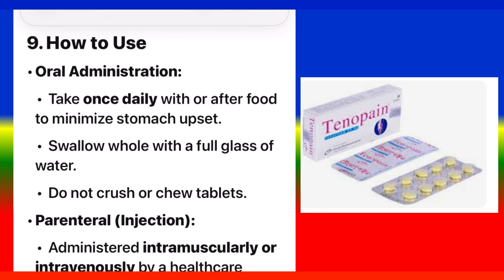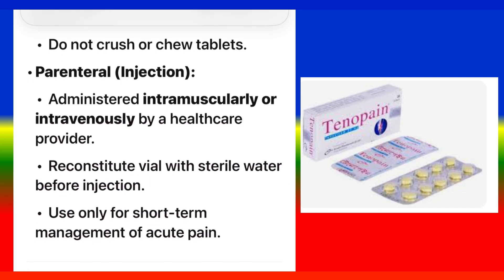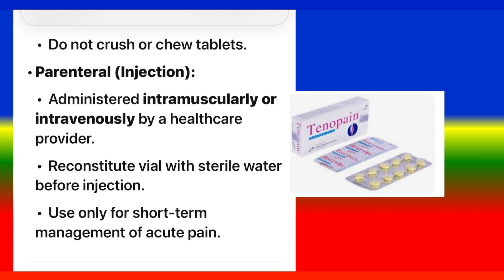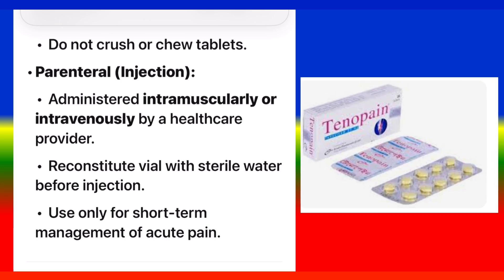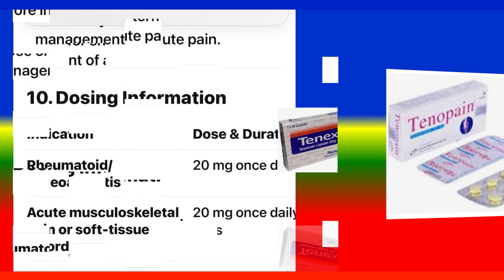How to Use — Oral administration: Take once daily with or after food to minimize stomach upset. Swallow whole with a full glass of water; do not crush or chew tablets. Parenteral injection: Administered intramuscularly or intravenously by a healthcare provider. Reconstitute vial with sterile water before injection. Use only for short-term management of acute pain.